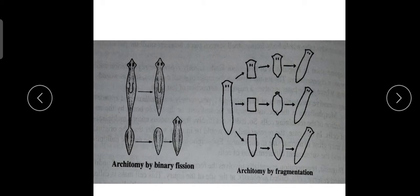Clonal reproduction is believed to be controlled by day length and temperature. During daytime, the brain produces a substance which inhibits fission. The production of this inhibitor appears to be under the control of photoperiod. Thus, in all probability, clonal reproduction mostly occurs at night.